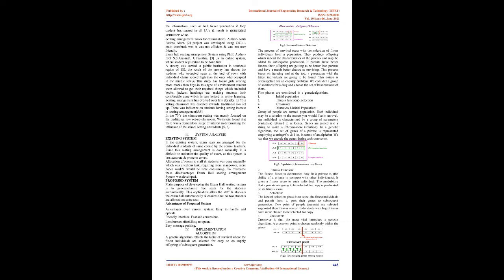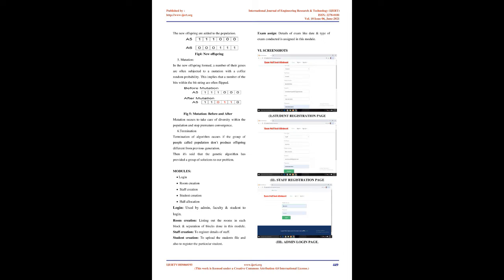In this type of environment, students were allowed to get their required things, which included books, jackets, handbags, etc., making students comfortable, which in turn helped in active learning. Seating Arrangement has evolved over a few decades. In the 70s, classroom setting was directed towards the traditional row setup. Weinstein found a tremendous surge of interest in determining the influence of school setting on students. In the existing system, exam seats are arranged for individual students of the same course by course teachers. Since this seating arrangement is done manually, it is difficult to maintain the quality of the exam, as this system is less accurate and prone to errors. Allocation of rooms to staff and students was done manually, which was a tedious task requiring more manpower, more paperwork, and would be time-consuming.